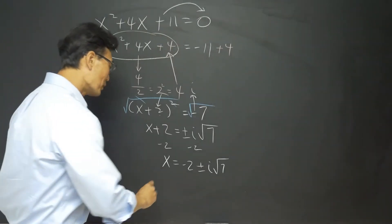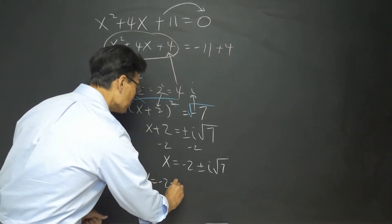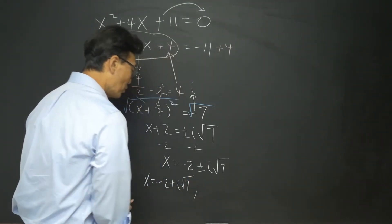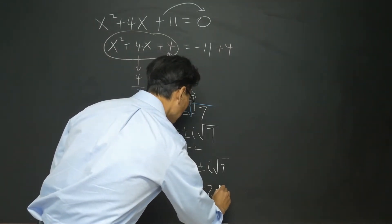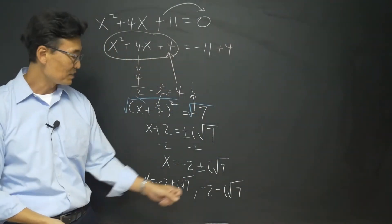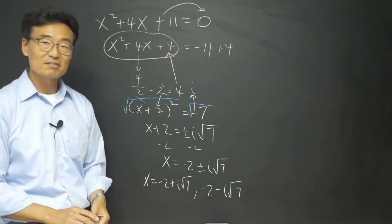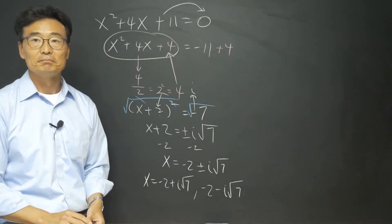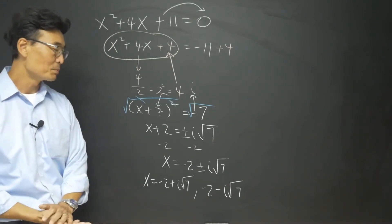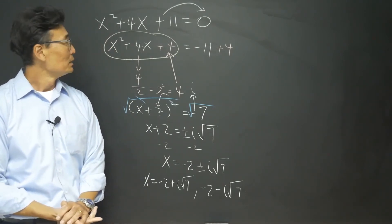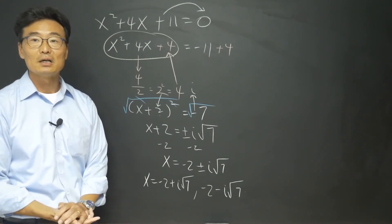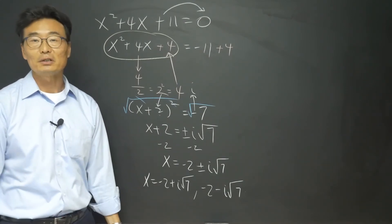You're more than welcome to write the final answer as negative 2 plus i root 7 and negative 2 minus i root 7 separately, because that's what the plus or minus sign means. Completing the square is a concept a lot of people have trouble with, so let me go ahead and do one more example to show you how it can be useful.